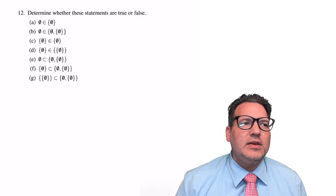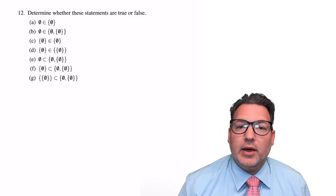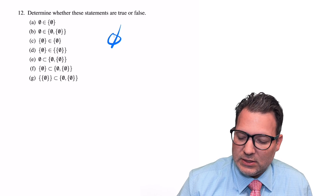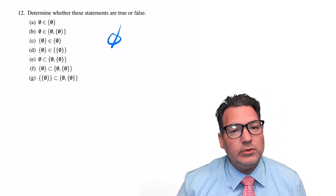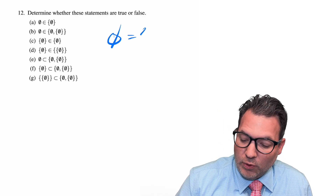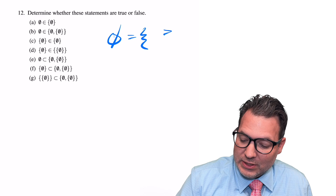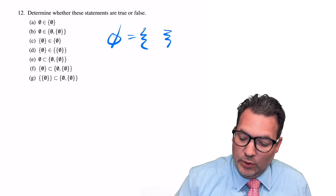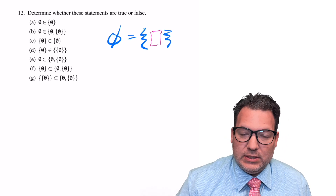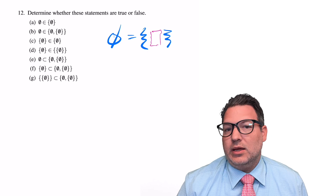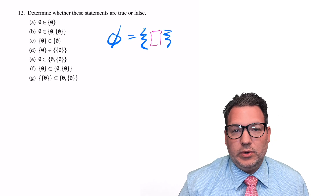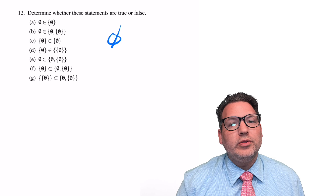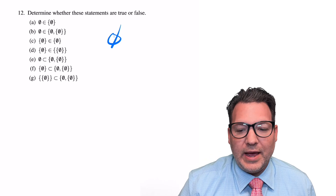Let's do a little set theory. Specifically, let's talk about the empty set. That is this symbol — a zero with a slash through it — and it stands for an actual set, but a set that contains nothing. One way we sometimes symbolize it is with curly braces with nothing between them, but we also use this symbol, the zero with the slash through it.